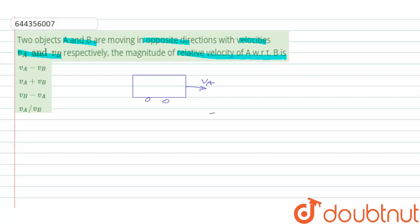Now there is another object also moving but in opposite direction with velocity VB like this. Now if you see the direction, VA is positive and VB is negative because there is negative x direction.